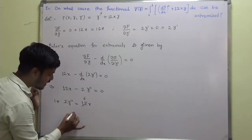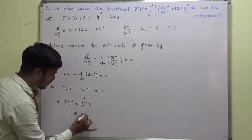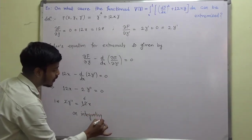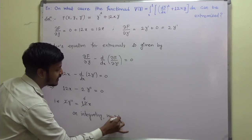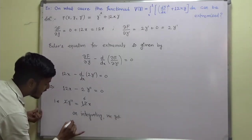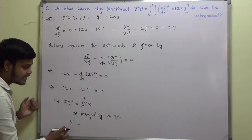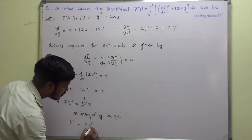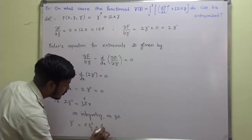So on integrating we get, one integration, one derivative gets cancelled, we remain with y' is equal to 6, integration of x is x square by 2 plus constant a.